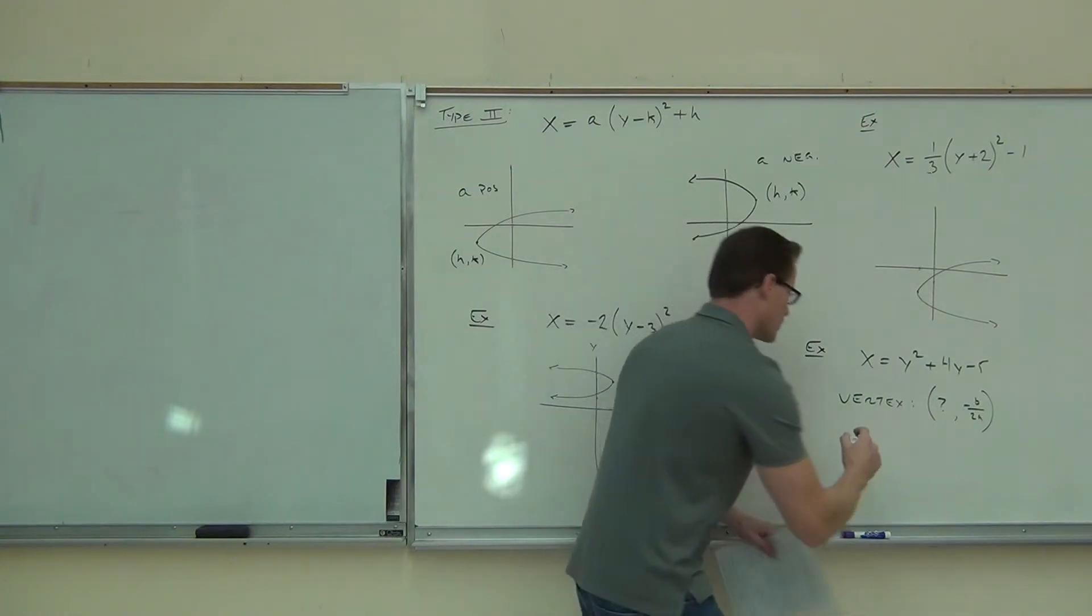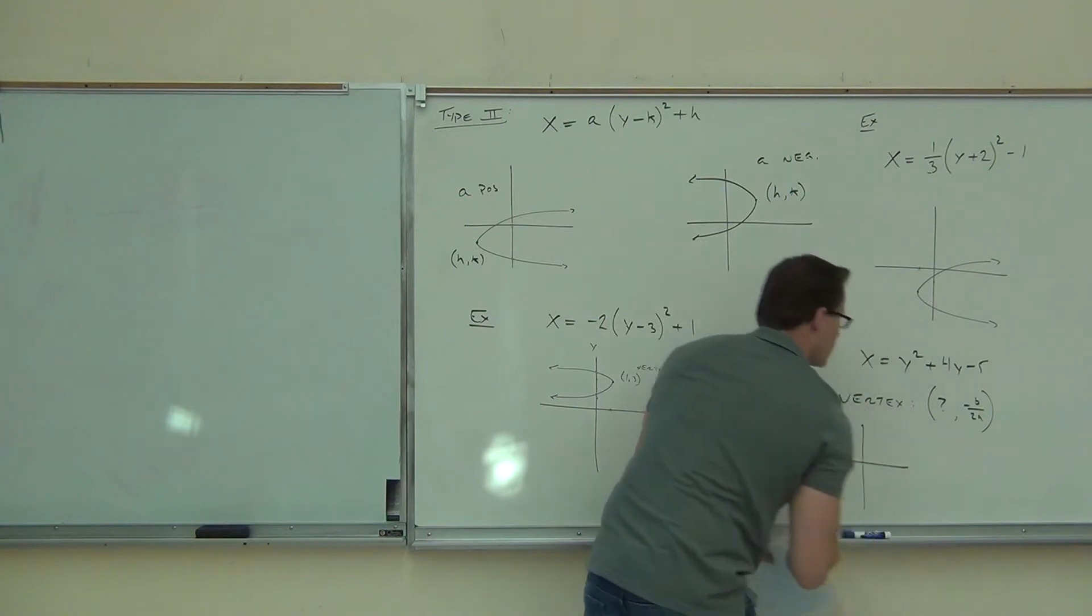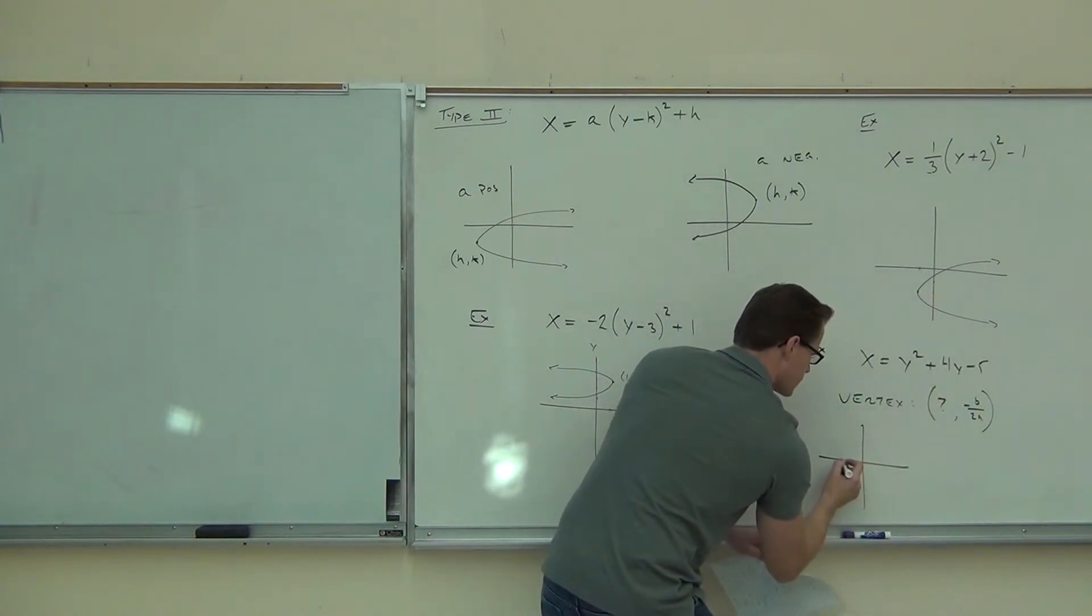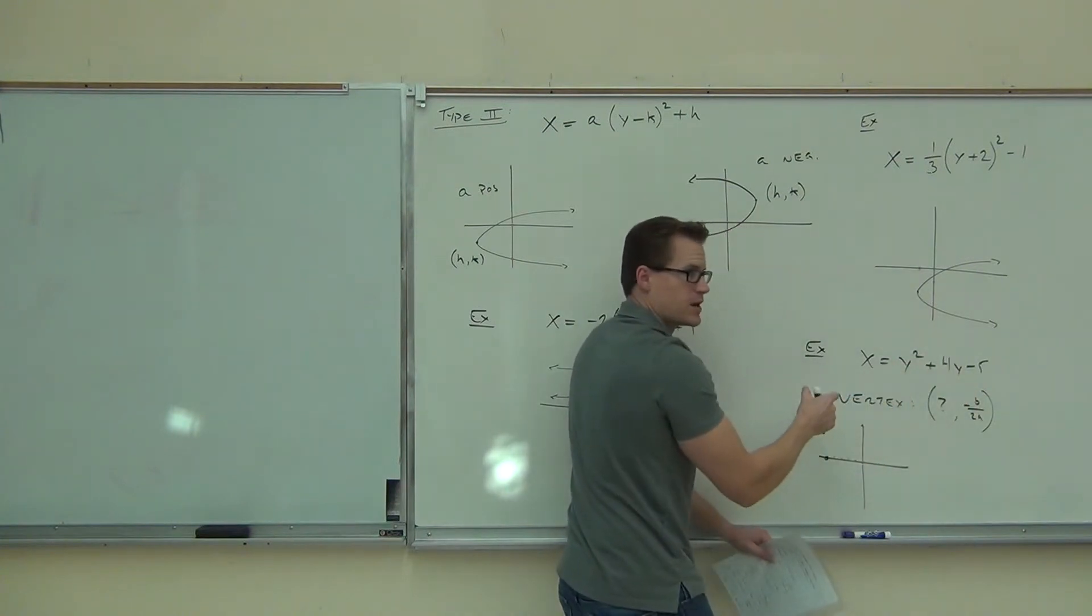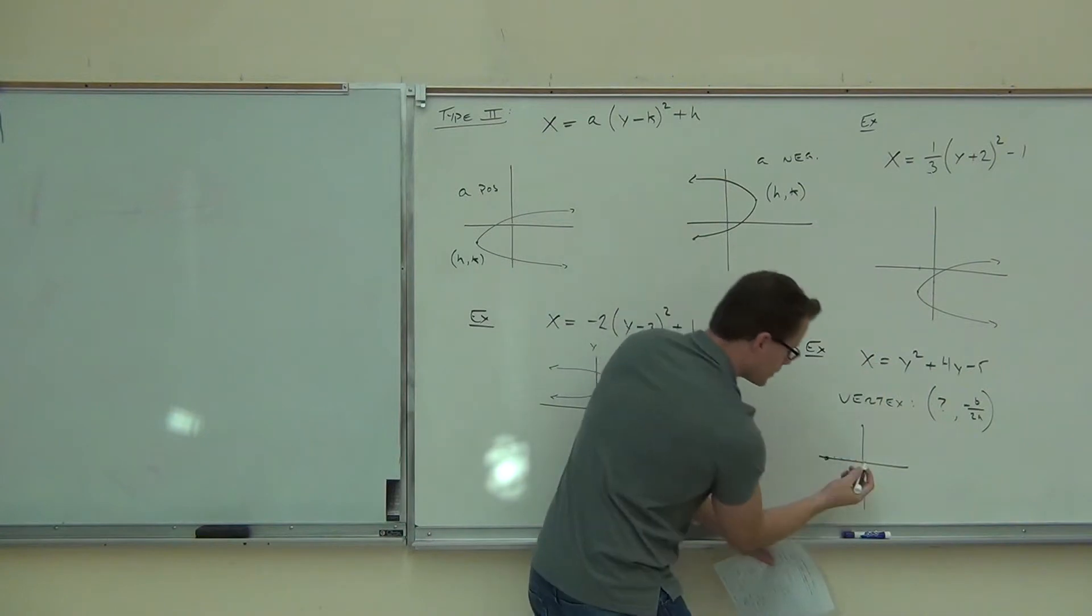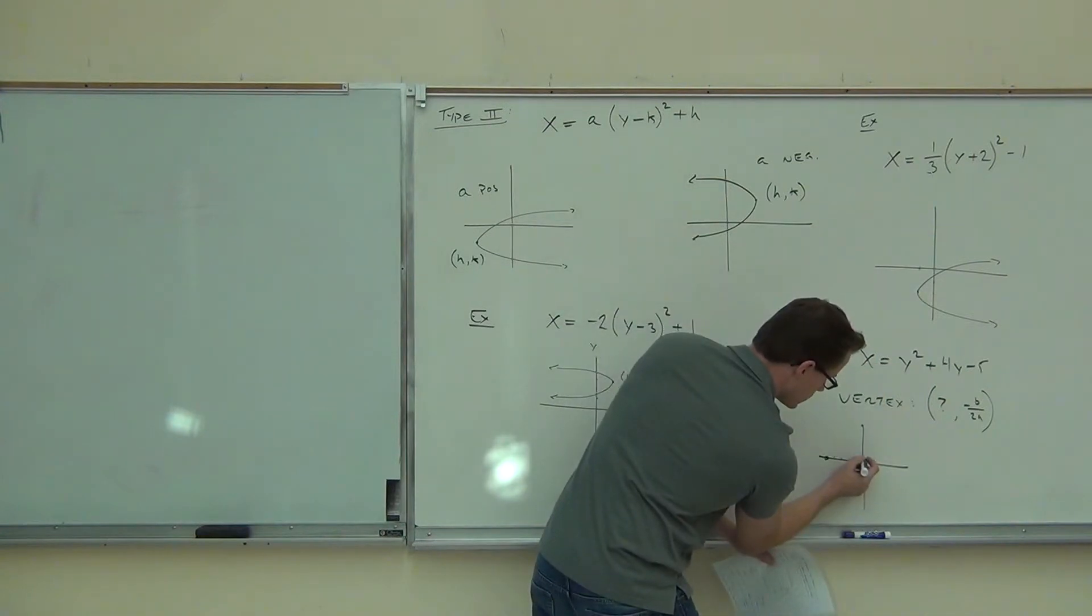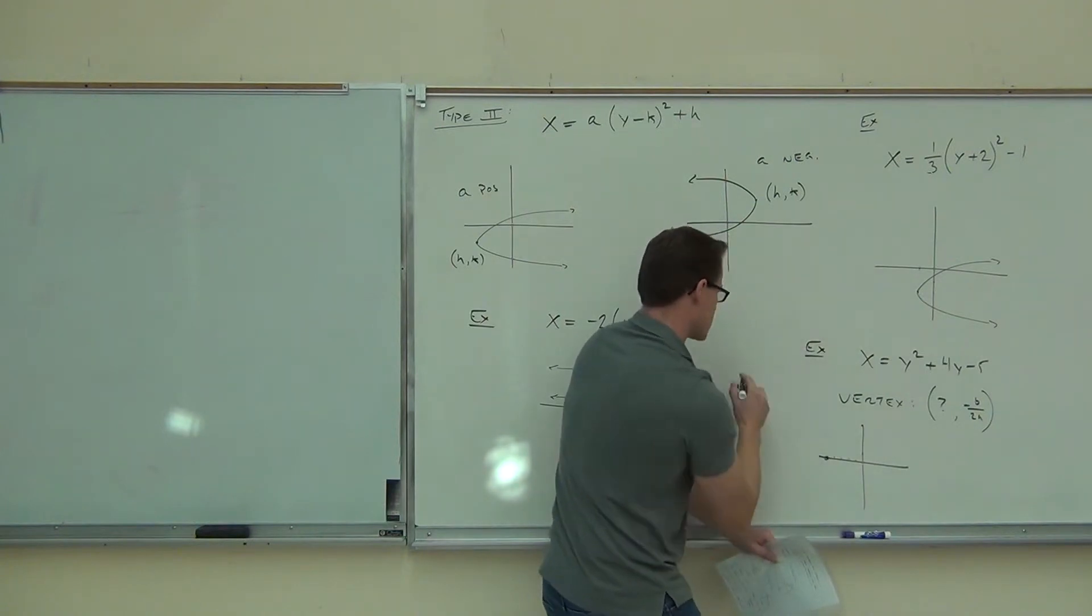So in our case, what I mean by this is x-intercept is negative 5. That's right there. Your y-intercepts, if you factor that, you're going to get x plus 5 and x minus 1. That means we get 1. Did I do that right? Let's see.